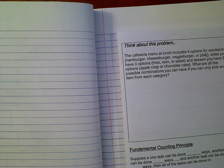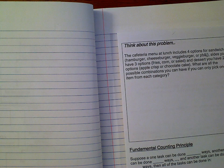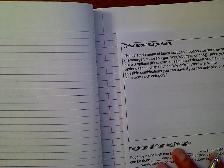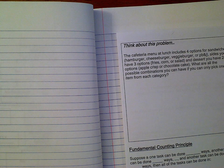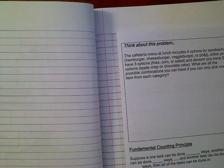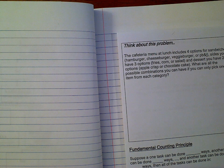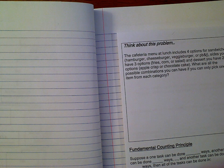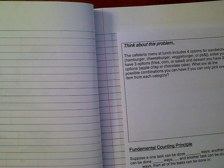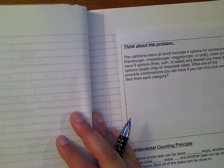The next chapter we're going to talk about is probability. But before we can get into probability, we have to talk about different ways to count things. That might seem silly because you can just count one, two, three, four, five — but sometimes when there are lots of options or lots of different possible ways, we need formulas to help us count.